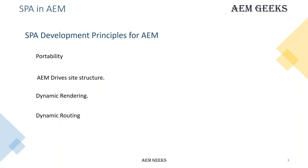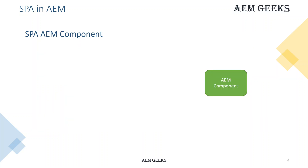Dynamic routing means the navigation should be handled by the SPA framework. For example, if I'm using a React framework, the navigation or routing should be handled at the client side by the routing framework, but content should be provided by AEM from the repository. If you navigate from page 1 to page 2, the content of page 2 should be delivered by AEM in the form of JSON.